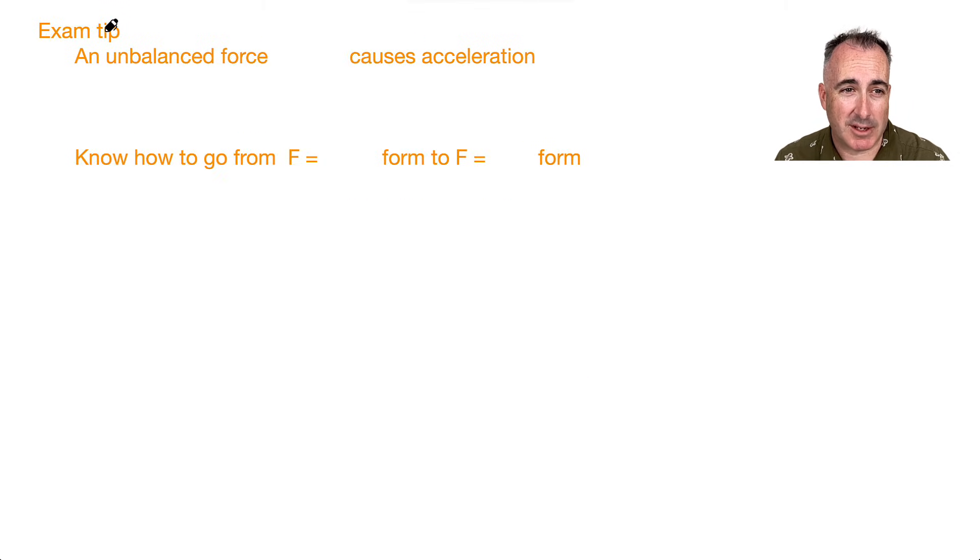So this is the key exam tip here for this. An unbalanced force, in other words F net, that causes an acceleration. I could not stress this enough. This is like the key thing here: whenever you have unbalanced forces, in other words, you add up all the forces in a free body diagram and they don't all cancel out, that means that object will accelerate. That's the key piece here. Really, everything just kind of bases on this.